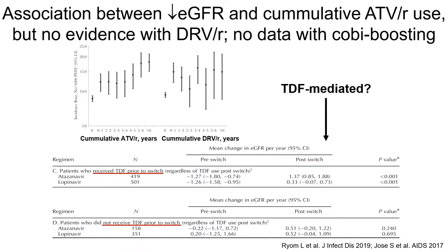Regarding the association between decreased glomerular filtration rate and cumulative atazanavir or lopinavir use: data with ritonavir-boosted PIs — not cobicistat boosting — show an increase in the incidence of decreased GFR with atazanavir and darunavir-ritonavir. A switching study from the UK showed a trend toward improvement in GFR when patients switched from atazanavir or lopinavir to darunavir. However, in both analyses, the effect was largely mediated by TDF use, raising the question of whether the effect attributed to PIs may actually be an interaction with TDF due to boosters.